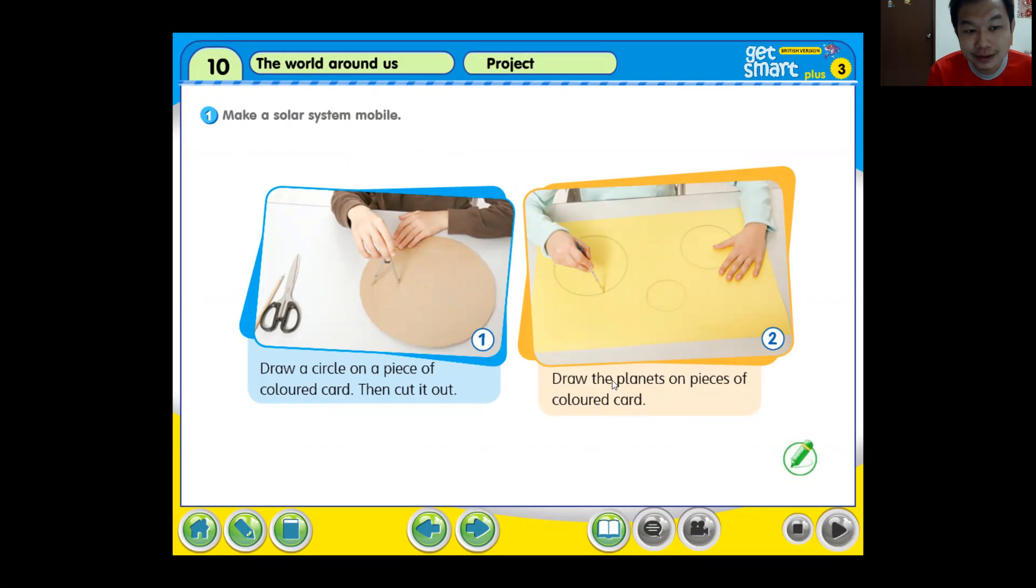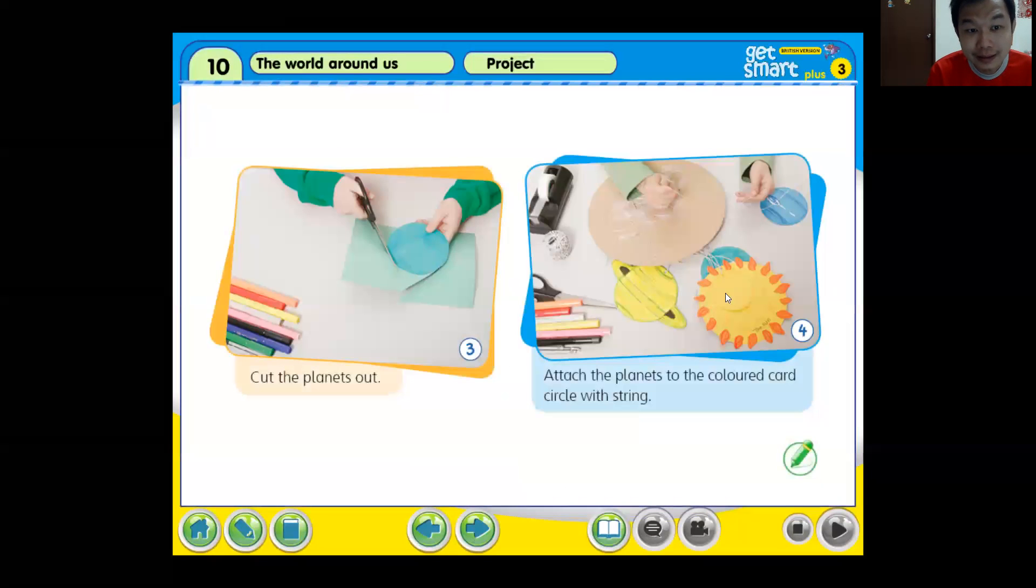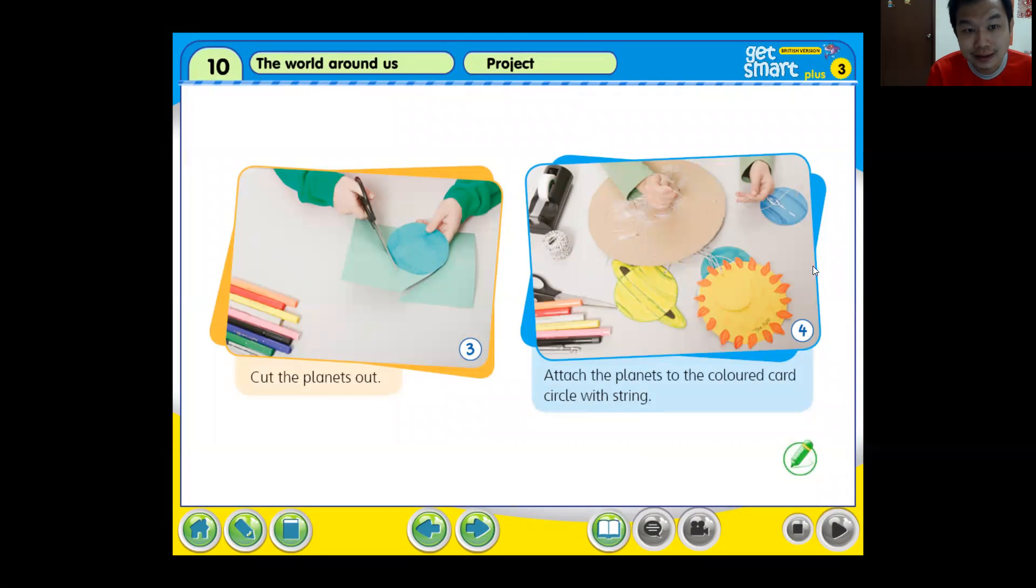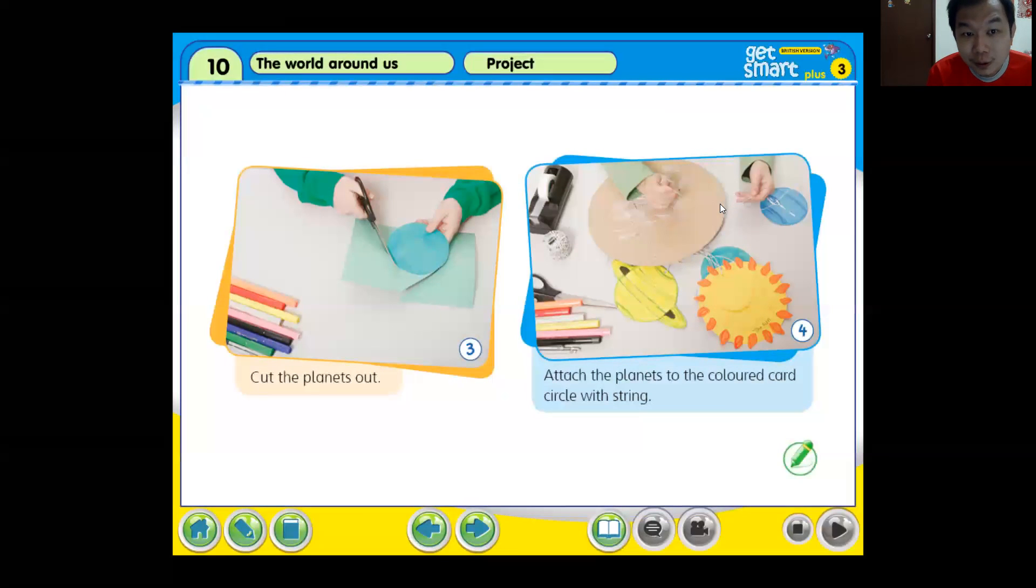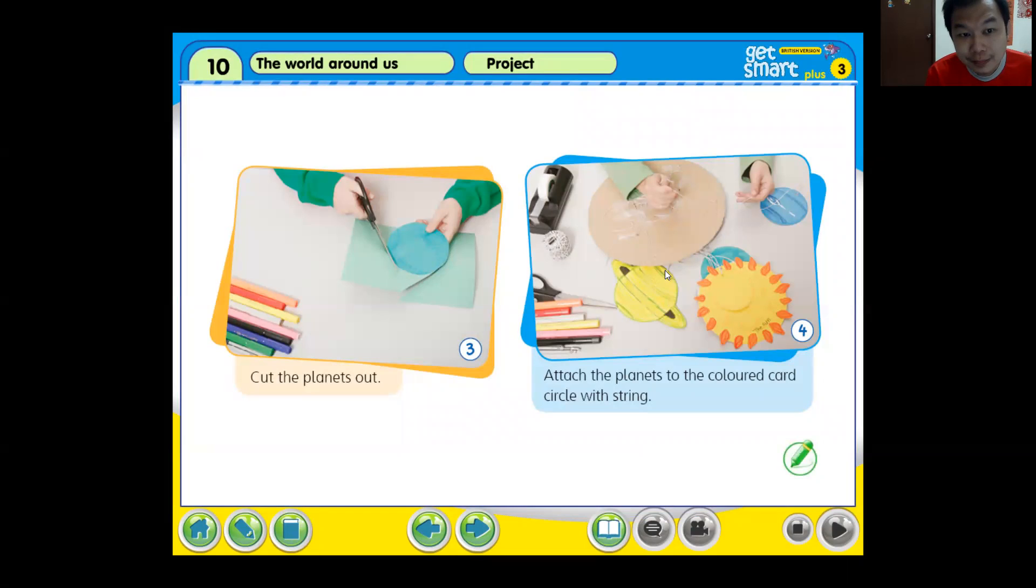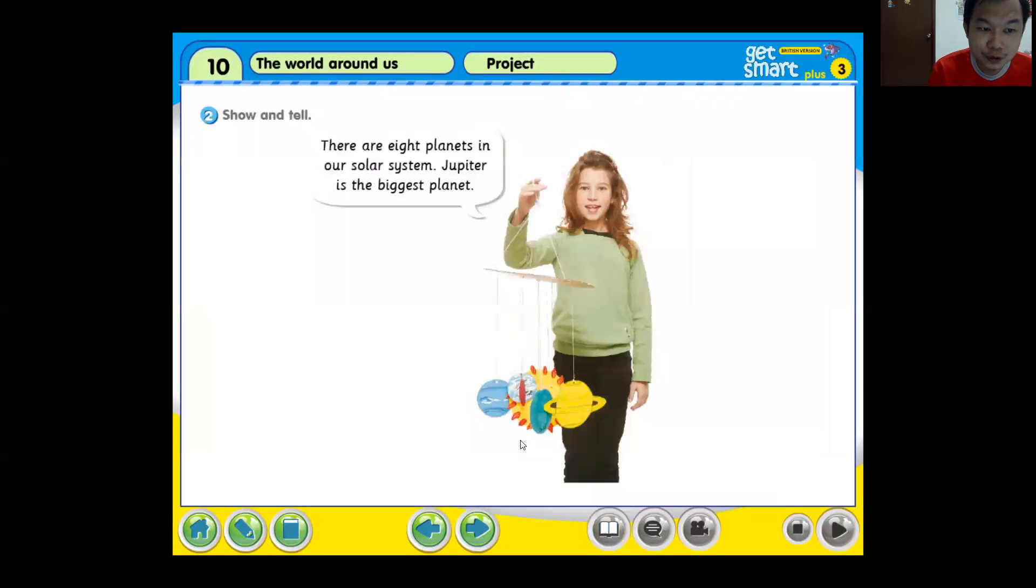Then you use this colored paper to draw your planets and then just design. Color like this. Design and then you make a hole, put a string, and then make a hole at the planet as well. Tie it and then tie it on top of the cardboard. That's all for your solar system.